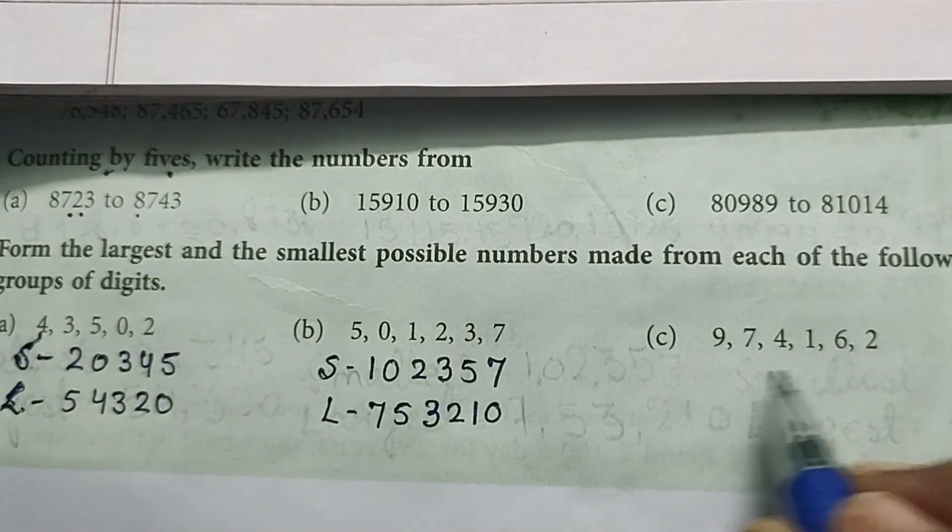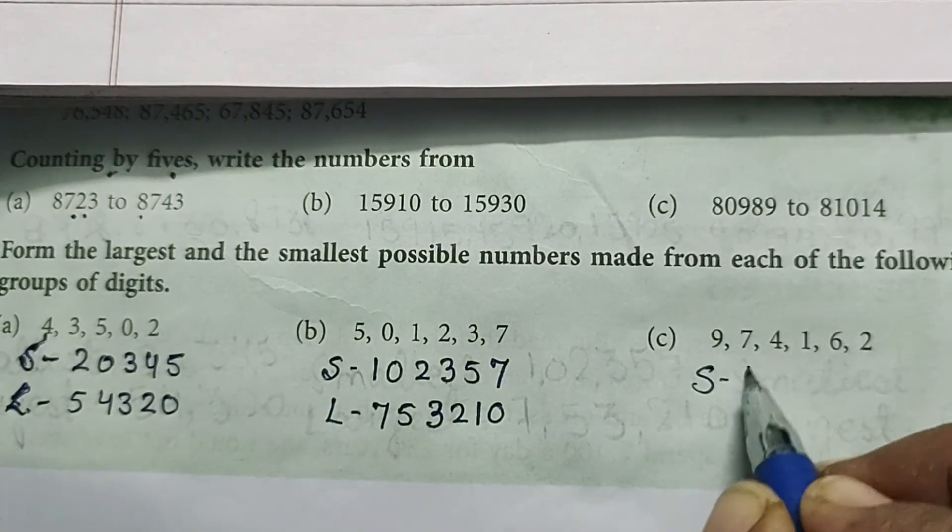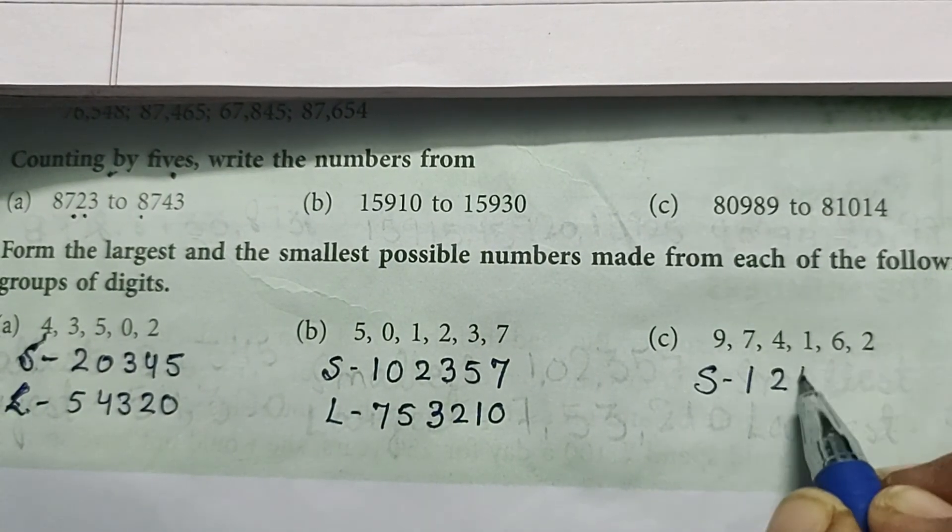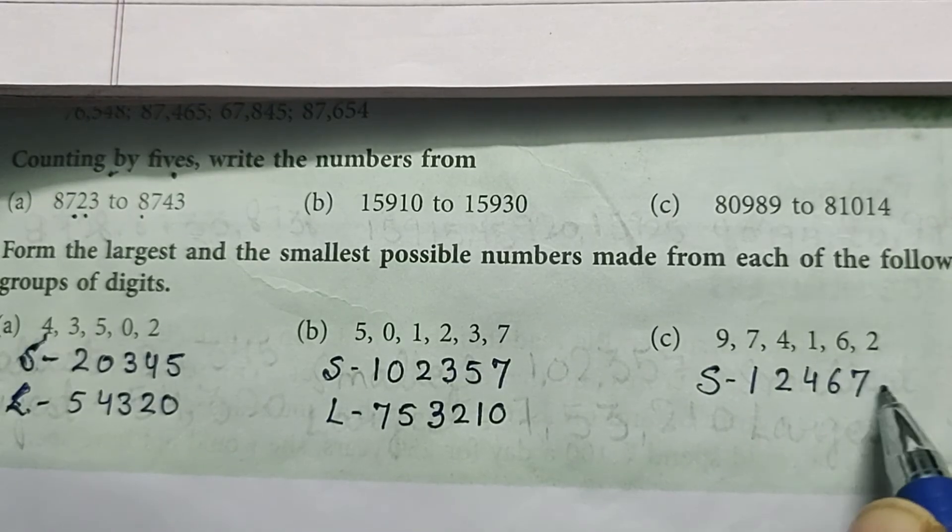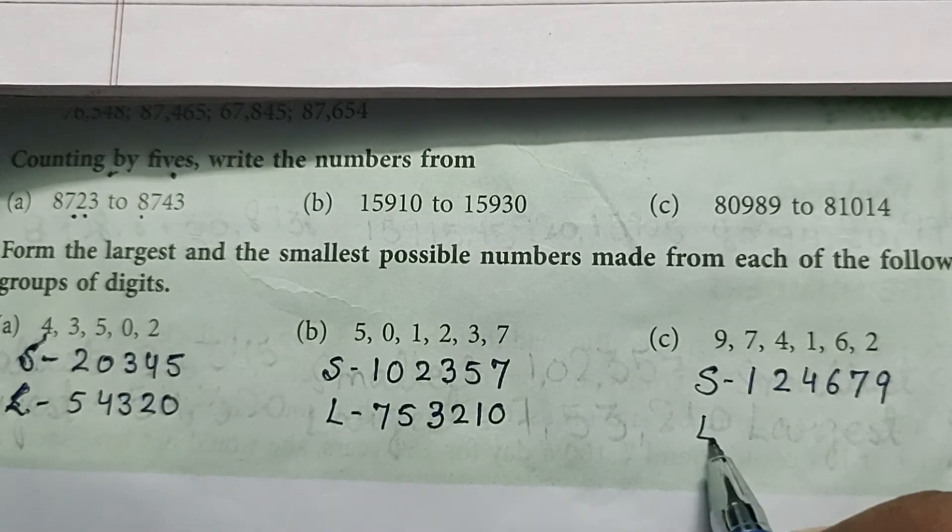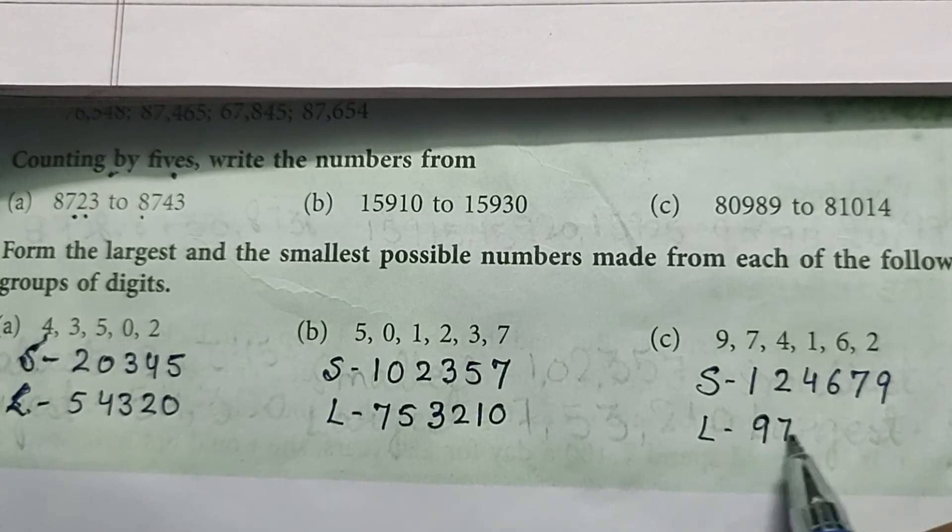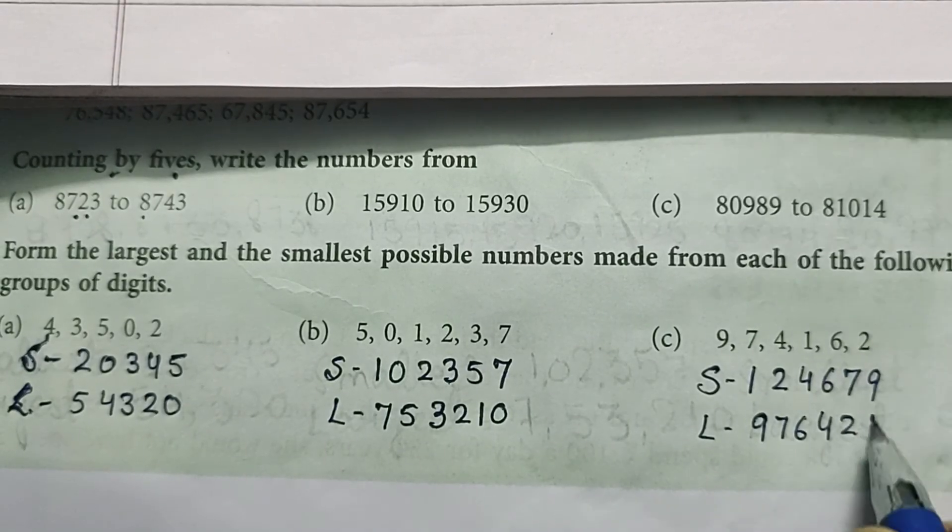Now C part: 9, 7, 4, 1, 2, 6. Smallest is 1, 2, 4, 6, 7, 9. Largest is 9, 7, 6, 4, 2, 1.